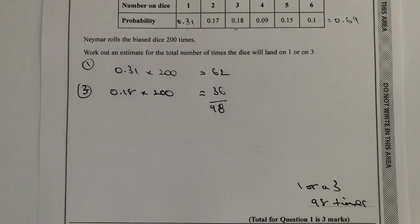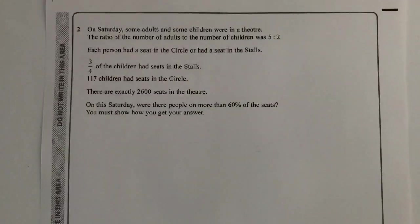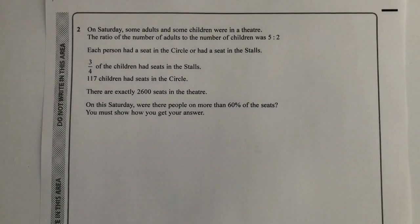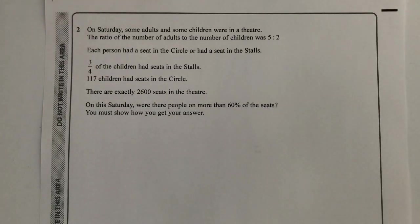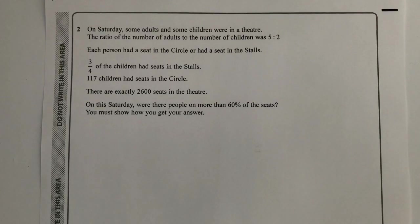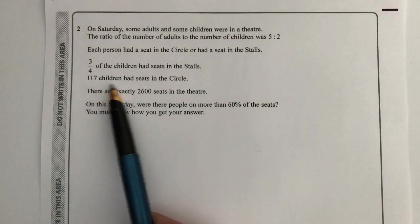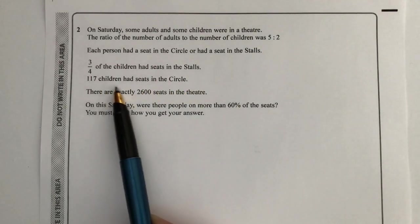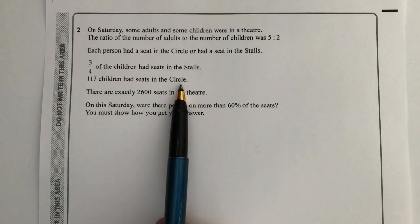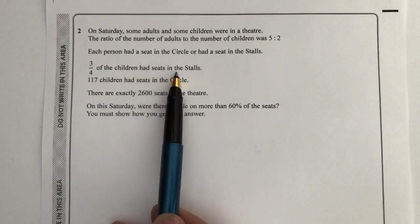Let's move on then to question number two, which deals with ratios. This is a fairly traditional type of question. Some adults and some children were in a theatre; the ratio of the number of adults to children was five to two. We're told that 117 children had seats in the circle, which represents a quarter of the children in the theatre, because three quarters of the children had seats in the stalls.